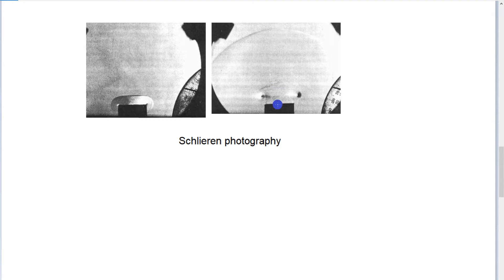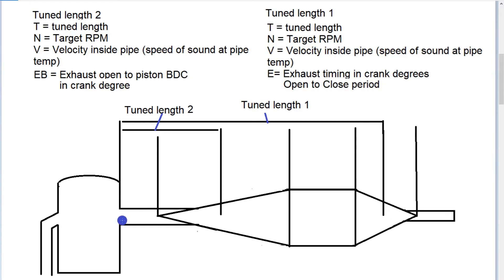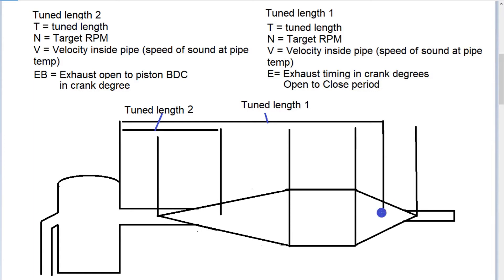There are two waves: one comes out as a compression wave, moves to the diffuser, and we get our first reflection back from the diffuser as an expansion wave — that's the suction wave. The compression wave continues on and reflects in the baffle cone, then we get a compression wave coming back to port plug. So we've got two waves and we need two timing lengths, because we have to know where the baffle cone is in distance from the piston, and where the diffuser cone is, so we know how far the wave has to travel and how much time we have at a certain RPM.